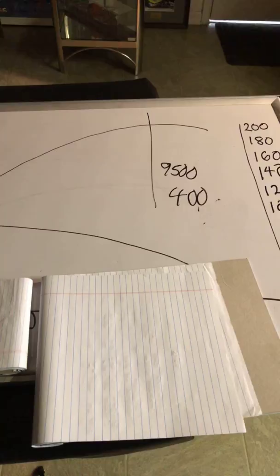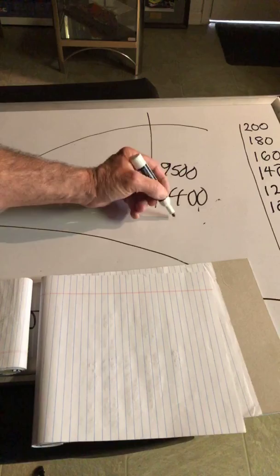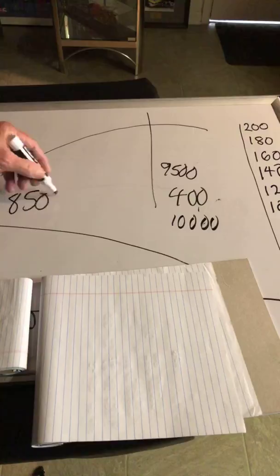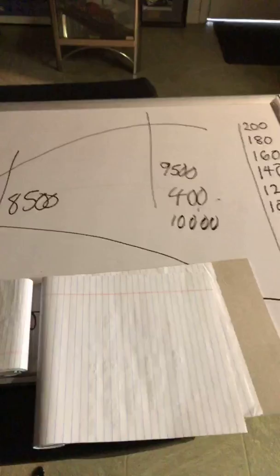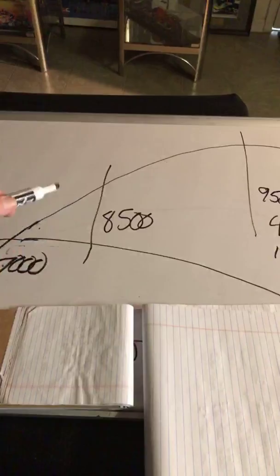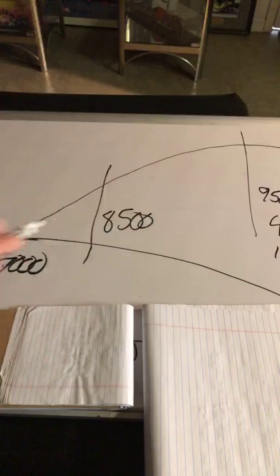The torque peak on this pro-stock engine was over here where we don't run it. Going down the track, shifting at 10,000 and falling back to 8,500 — peak torque was way below. The torque power was way below the horsepower. So on the whole pro-stock run, you never even see any torque numbers. From the start line to the finish line, the torque numbers never even make radar on a pro-stock engine.